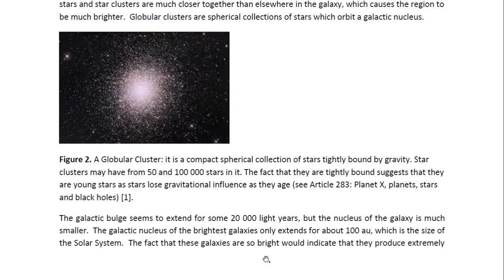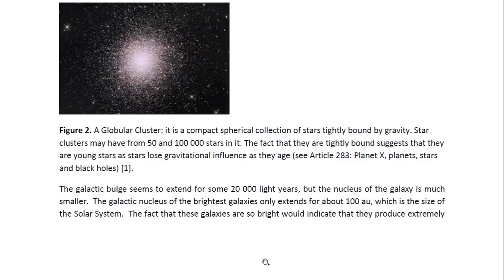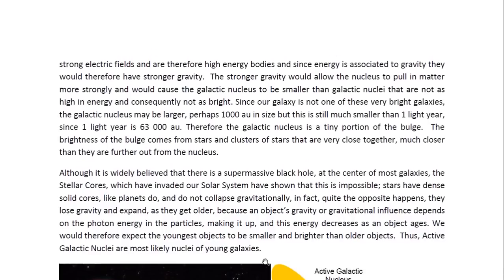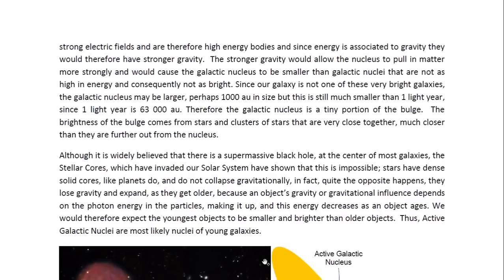The galactic bulge seems to extend for some 20,000 light years, but the nucleus of the galaxy is much smaller. The galactic nucleus of the brightest galaxies only extends for about 100 AU, which is the size of the solar system. The fact that these galaxies are so bright indicates that they produce extremely strong electric fields and are therefore high energy bodies. Since energy is associated to gravity, they would therefore have stronger gravity. The stronger gravity would allow the nucleus to pull in matter more strongly and would cause the galactic nucleus to be smaller than galactic nuclei that are not as high in energy and consequently not as bright.